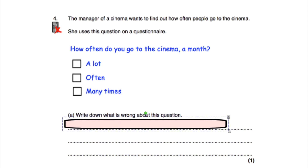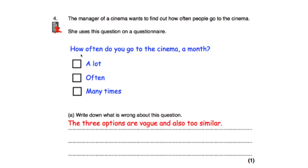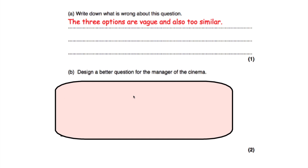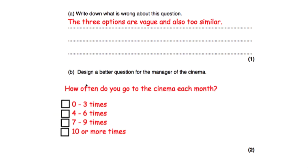She obviously wants people to say they go to the cinema loads. Part B asks us to design a better question. I've used the same wording: 'How often do you go to the cinema each month?' with numerical boxes: 0 to 3 times, 4 to 6 times, 7 to 9 times, or 10 or more times. With these response boxes there's something for everyone to tick — whether they never go, go 8 times, or go very frequently.